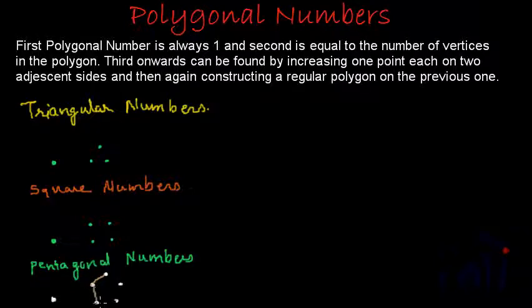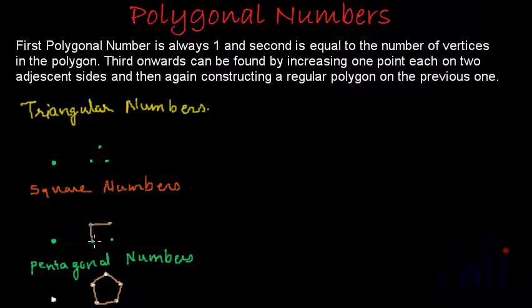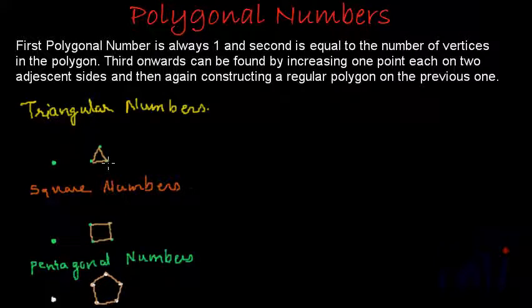This will construct a regular pentagon. And when we were talking about square numbers, the second square number was 4 because there are 4 vertices in a square. In triangular numbers, the second number is 3 because there are 3 vertices in a triangle. Next, the third number onwards can be found by increasing one point each on two adjacent sides and then again constructing a regular polygon on the previous one.